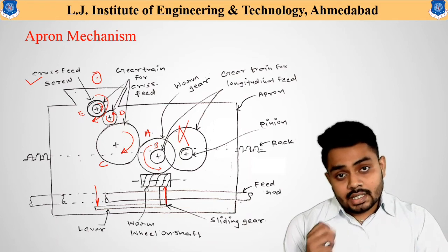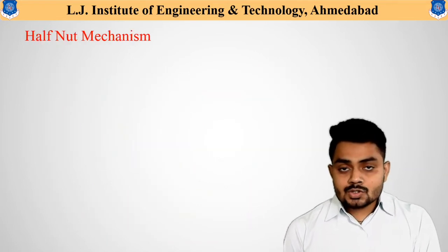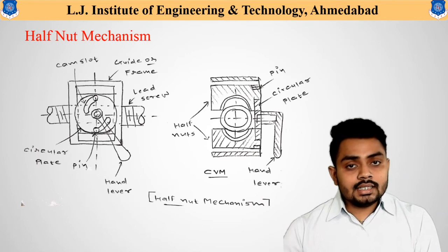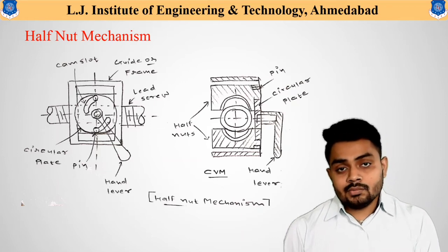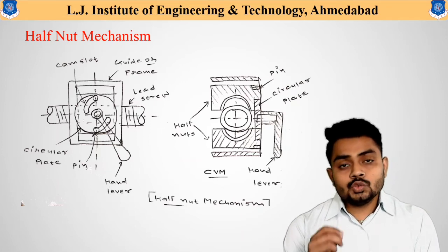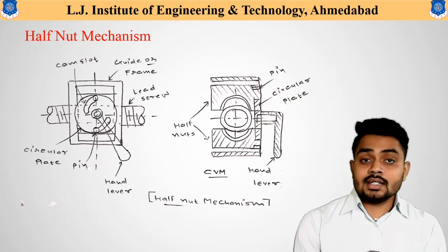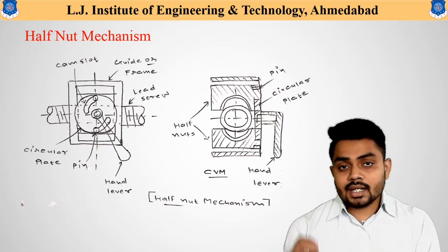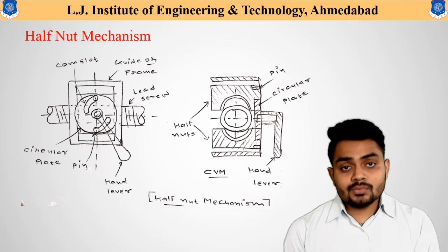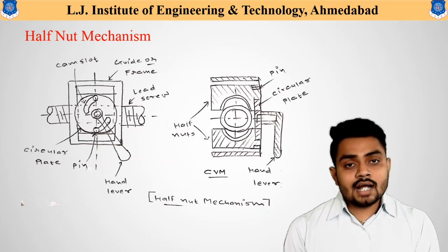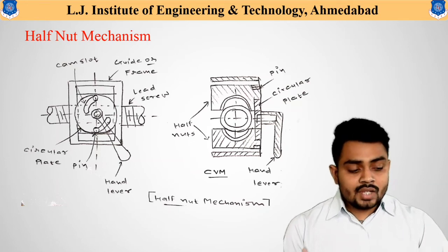The next important mechanism is the half nut mechanism. To connect the tumbler gear mechanism and the apron mechanism, and specifically to connect the carriage to the lead screw, one specific arrangement is required — the half nut mechanism. This mechanism is required only in the case of thread cutting operations.